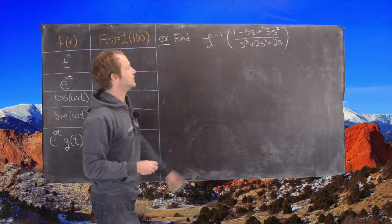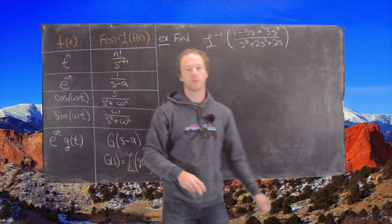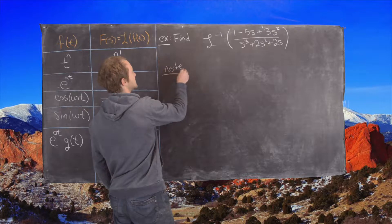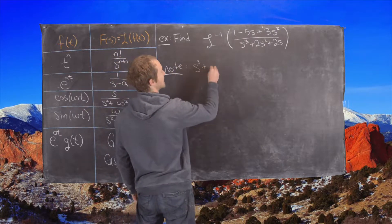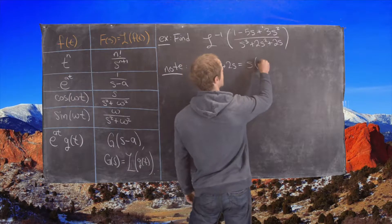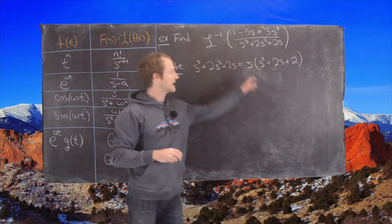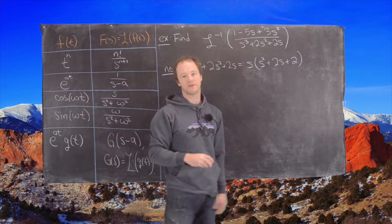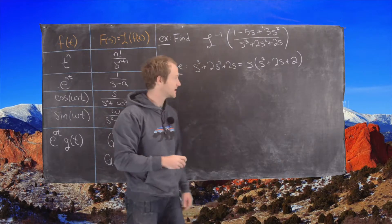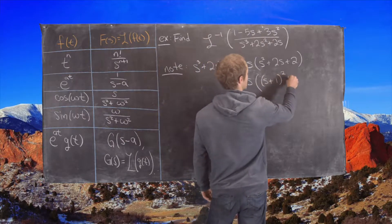Since we have a rational function, we want to write this in terms of things on the right-hand side of this chart, so we probably want to use partial fractions. First, notice that the denominator factors as follows: s cubed plus 2s squared plus 2s — you can take an s out, leaving s squared plus 2s plus 2. The discriminant of this is negative, which means it has complex roots, so we should complete the square. That gives us s times the quantity s plus 1 squared plus 1.